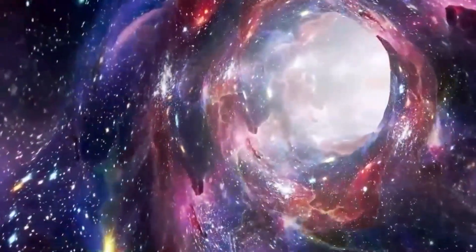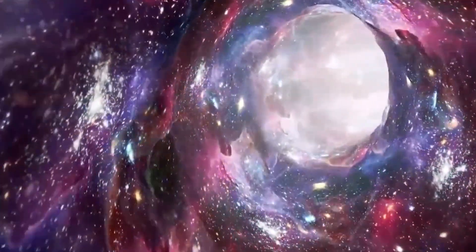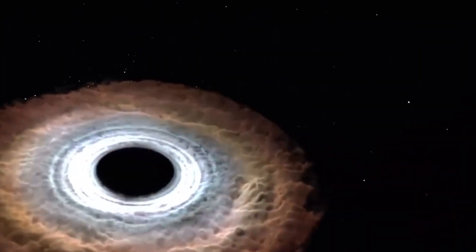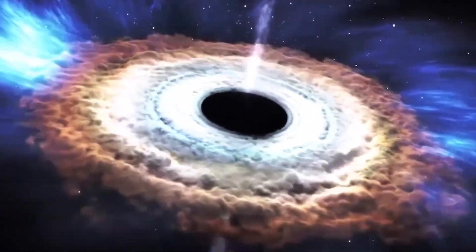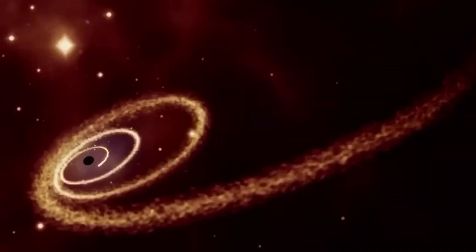The magnetic fields around black holes are thought to be incredibly powerful and are responsible for shaping the material around the black hole into the accretion disk. The new image shows that these magnetic fields are even stronger than previously thought, with some of them being a billion times stronger than the magnetic fields on the surface of the Earth.